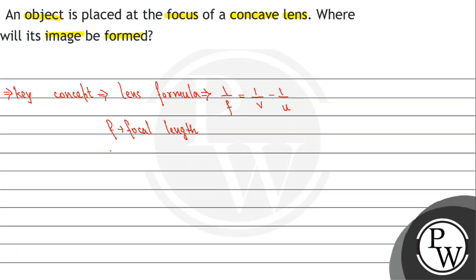Here, f denotes the focal length of the lens, v denotes the image distance, and u denotes the object distance.